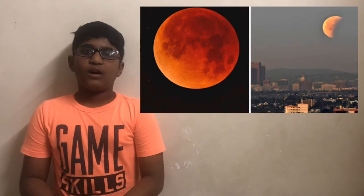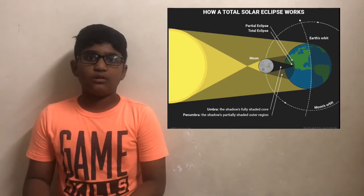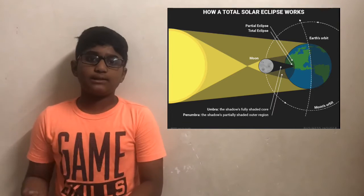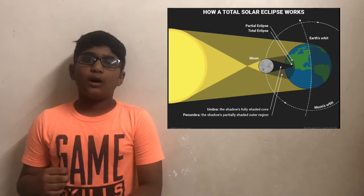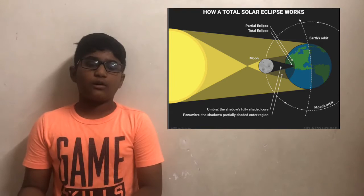This happens because the sun reflects all the VIBGYOR colours, so red and orange light reaches the moon, making it appear red. Another fact is that if a solar eclipse occurs, a lunar eclipse will occur before or after two weeks.